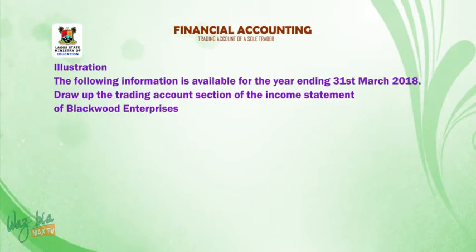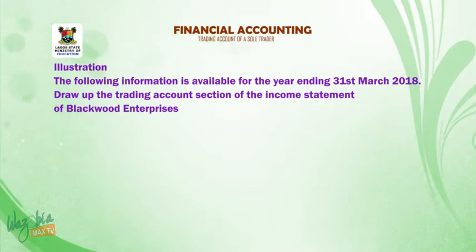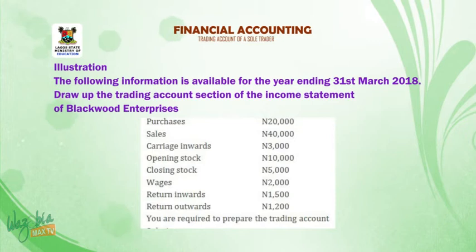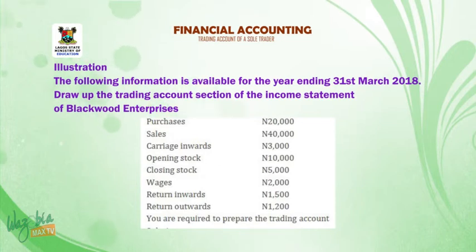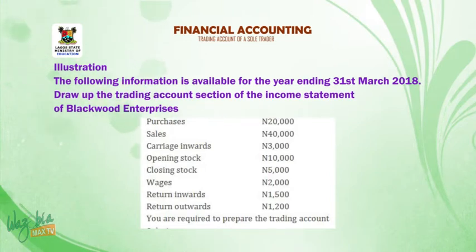Gross profit: this is the excess of sales over the cost of goods sold. We now look at an illustrative question. The following information is available for the year ended 31st of March 2018. Draw up the trading account section of the income statement of Blackwood Enterprises: Purchases $20,000; Sales $40,000; Carriage inwards $3,000; Opening stock $10,000; Closing stock $5,000; Wages $2,000; Return inwards $1,500.